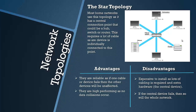The star topology is also high performing — data is transferred quickly because no data collisions occur. Unfortunately it is expensive to install because a lot more cabling is required, and you also need the extra hardware — a hub or switch at the centre — which can be costly. The biggest disadvantage is that if the central device fails, the whole network fails, since everything has to pass through it. Despite this, the advantages make it very popular.